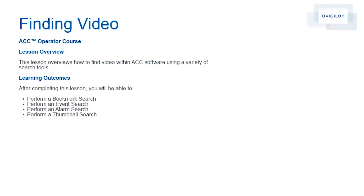This lesson overviews how to find video within ACC software using a variety of search tools. After completing this lesson, you will be able to perform a bookmark search, perform an event search, perform an alarm search, and perform a thumbnail search.